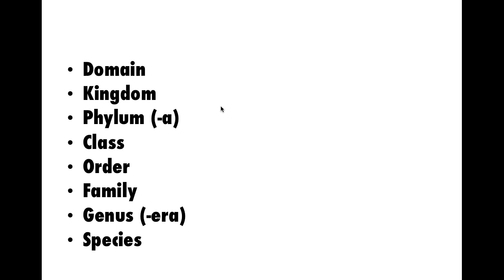We've got a couple of interesting pluralizations to remember. If we have more than one phylum, we've got two phyla — we change from the '-um' ending to the '-a' ending to make it plural. More than one kingdom: kingdoms. Classes, orders, families. If we have more than one genus, we have genera — we change the '-us' to an '-era' ending.